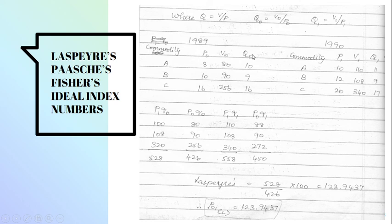Q0 is nothing but V0 by P0. So 80 by 8 is 10, 90 by 10 is 9, 256 by 16 is 16. Similarly P1 and V1 are given, so Q1 can be found by using the formula V1 by P1. So 110 by 10 which is 11, 108 by 12 which is 9, 340 by 20 which is 17.